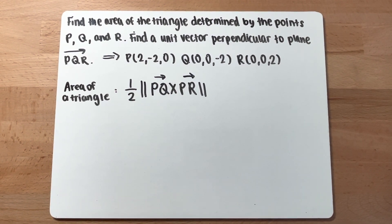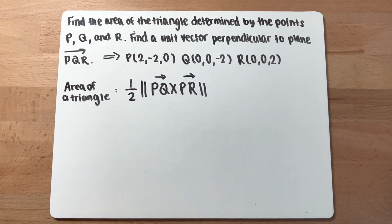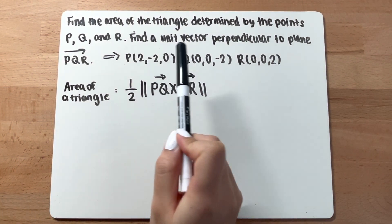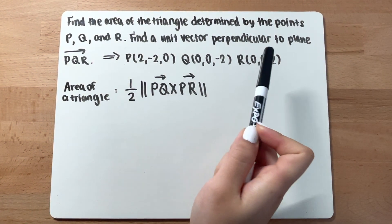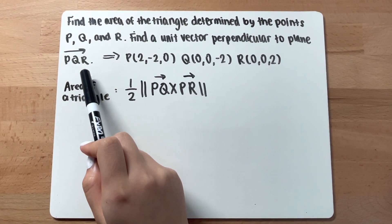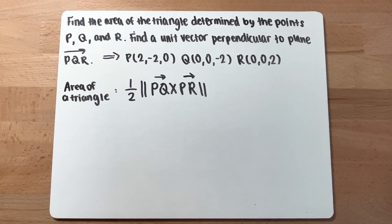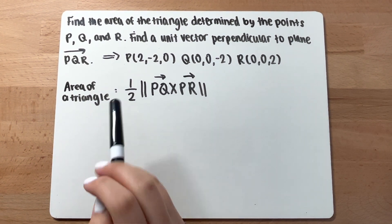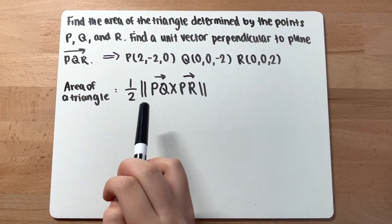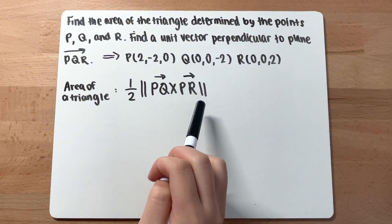This problem asks you to find the area of a triangle determined by three points p, q, and r, and to find a unit vector perpendicular to the plane p, q, r. The area of a triangle is one-half times the magnitude of the cross product.